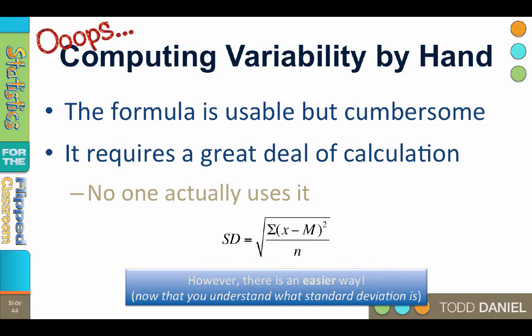I've given you the definitional formula that we used to understand the relationship between the sum of squares, variance, and standard deviation. It is a perfectly serviceable formula, but using it is cumbersome and it requires a great deal of calculation. So no one actually uses it when calculating variability by hand.